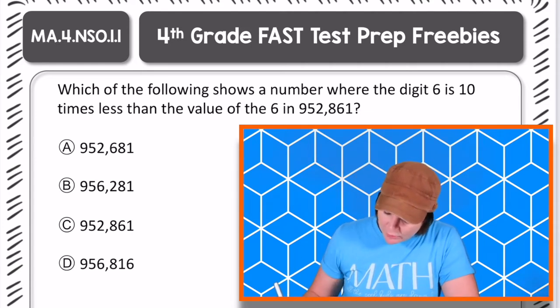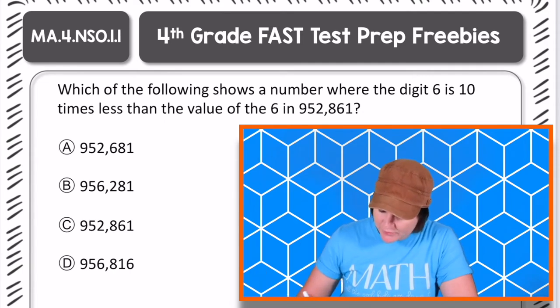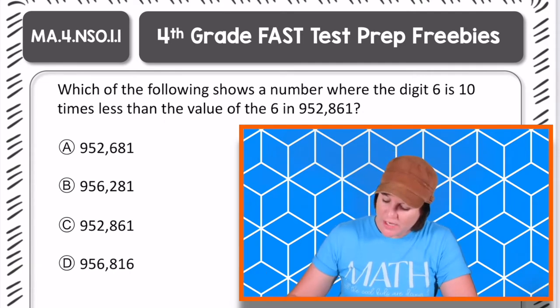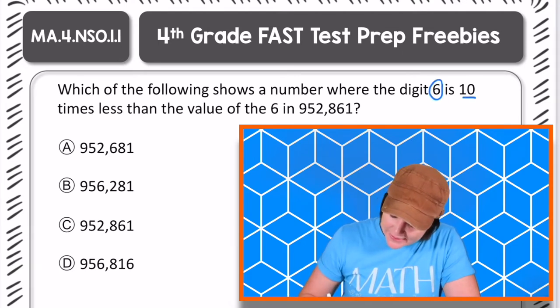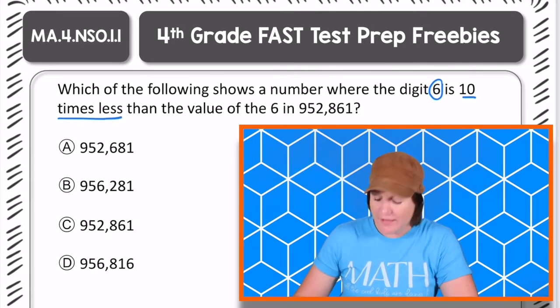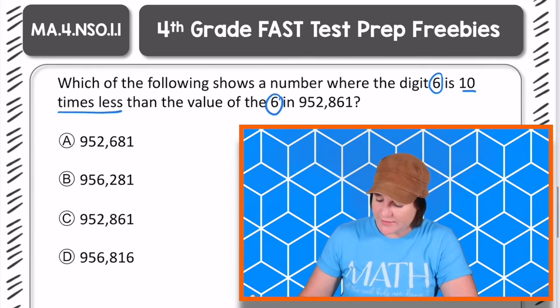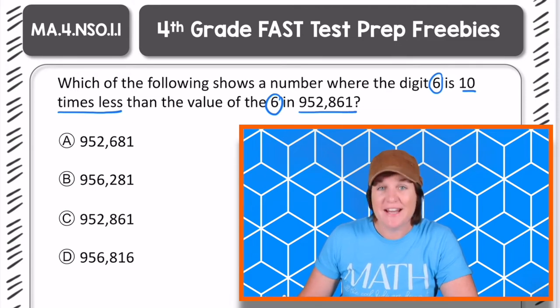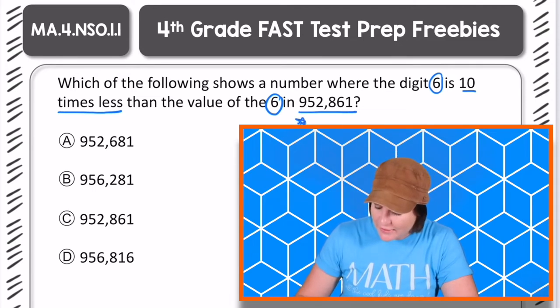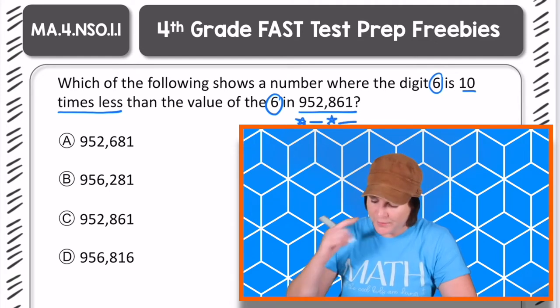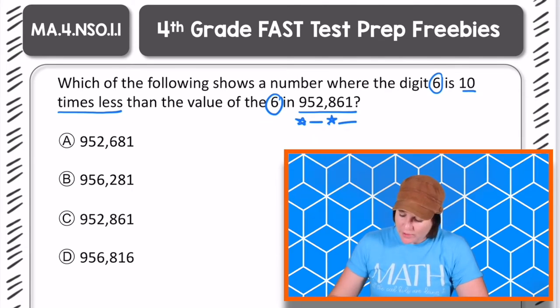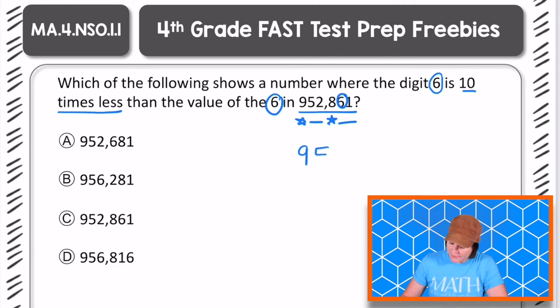So it says, Which of the following shows a number, so A, B, C, or D, which of those shows a number where the digit 6, digit 6 is 10 times less than the value of the 6 in this number right here, 952,861? Okay. So I know I'm working with the digit 6, which is right here. I'm just going to bring this number down and make it a little bit bigger so I can work with it a little bit larger.